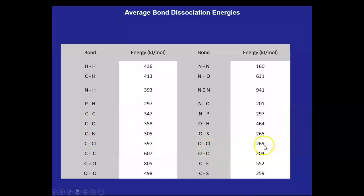You see that the two highly electronegative atoms, oxygen and chlorine 269, carbon and chlorine 397, because the carbon chlorine bond is a stronger bond.